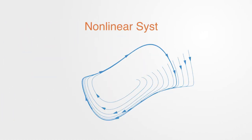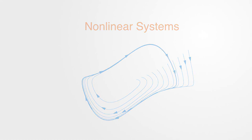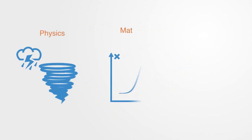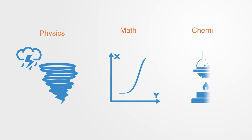Thus, the areas of nonlinear systems and their dynamics is another major part of the framework of complexity theory that has come largely from physics, mathematics, and the study of far-from-equilibrium processes in chemistry.